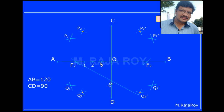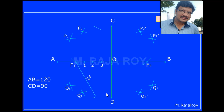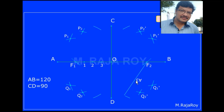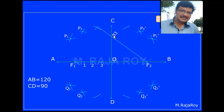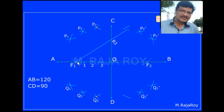Now take A3 as radius with F1 as center, draw an arc on the top side and one more arc on the bottom side as shown. Now change the center to F2 and draw an arc on the top side and one more arc on the bottom side. Now take B3 as radius with F2 as center, draw an arc — that will intersect with the previous arc and we can get P3. Draw an arc on the bottom side and we can get Q3. Change the center to F1 and draw an arc to get P3 dash. Draw an arc on the bottom side to get Q3 dash.